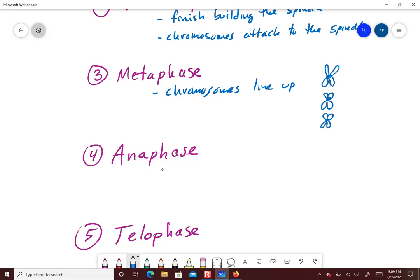So it doesn't matter how many you draw for however many there are, but they line up single file. And these chromosomes I'm drawing have sister chromatids, because we've already gone through interphase and we've copied the DNA. Alright? So lining up in the center of the cell.